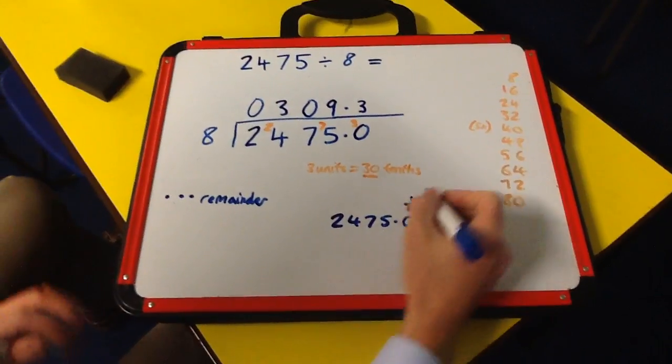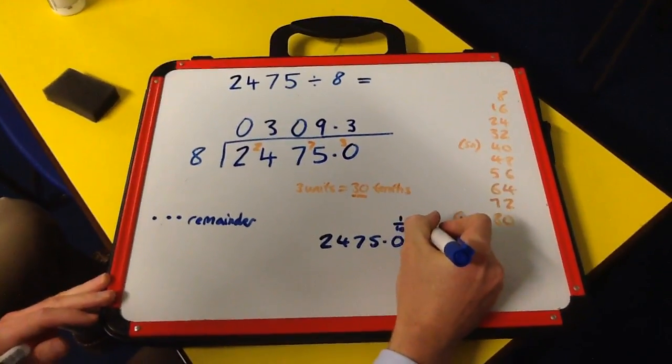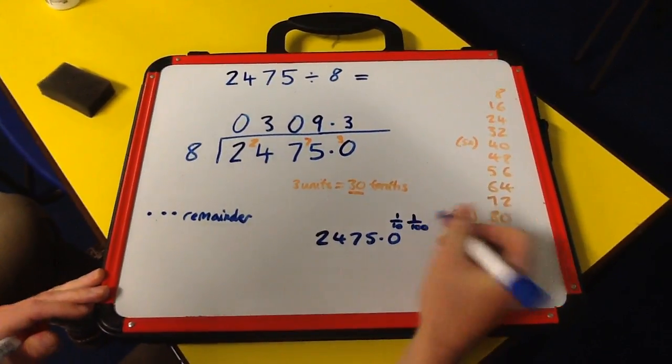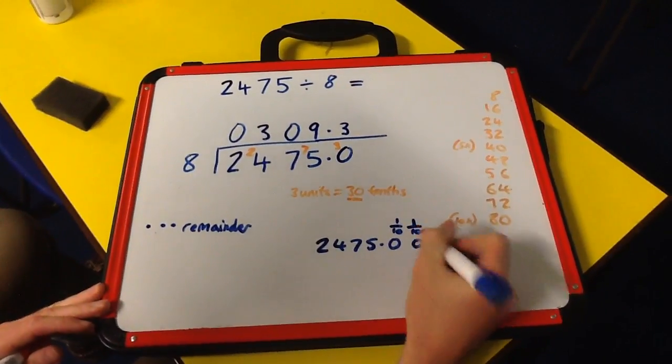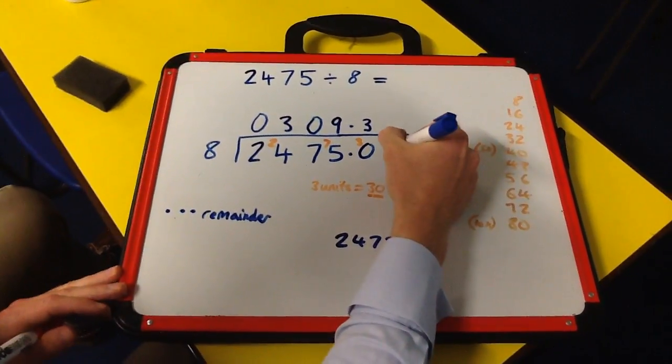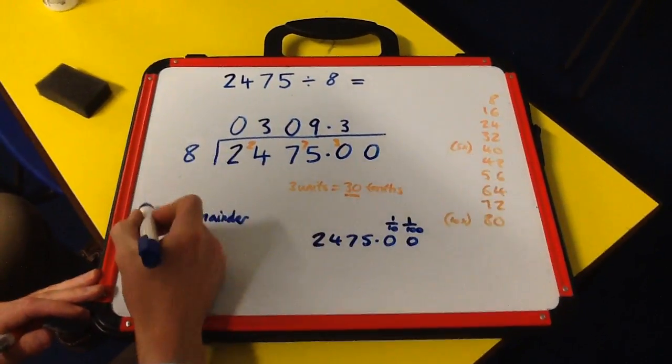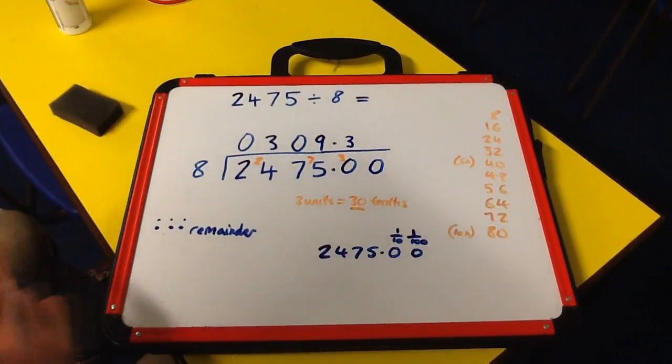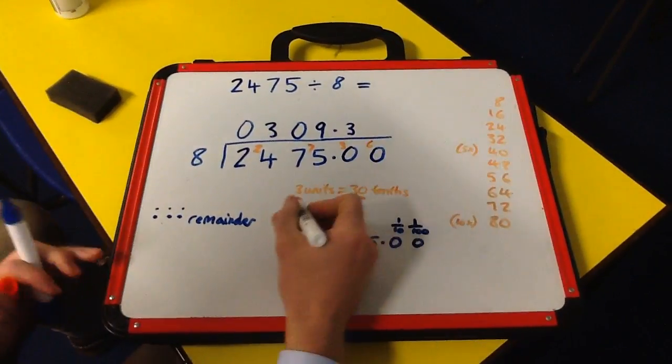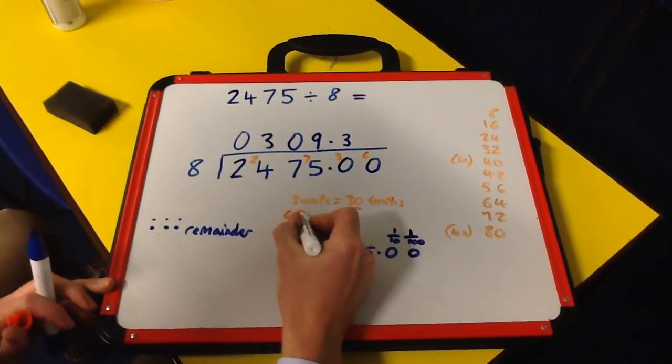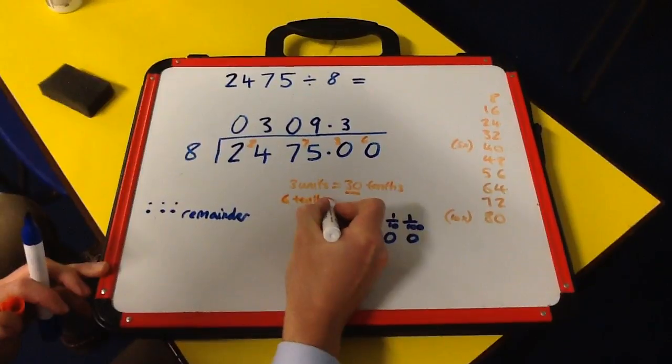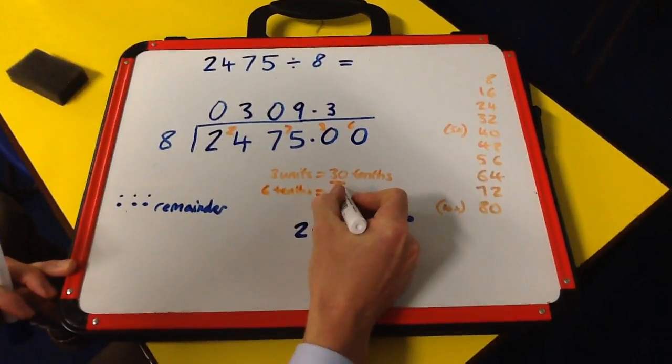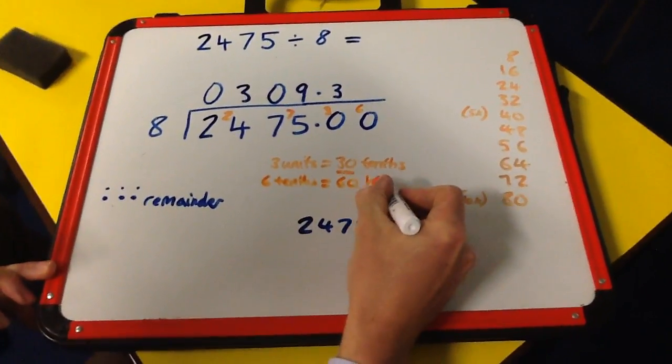We do exactly the same again. We extend the number by adding 0 hundredths. Our remainder of 6 tenths is going to be carried up here and become 60 hundredths.